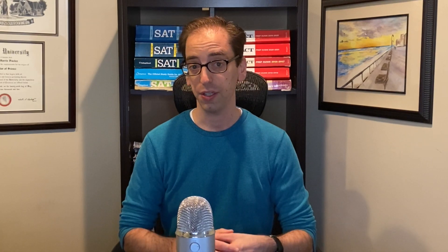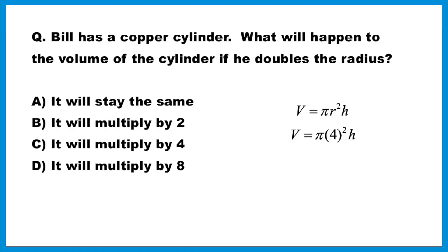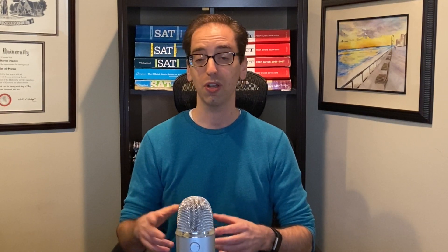Let's let the radius equal 2 — that keeps the numbers fairly easy. So if volume equals π r² times the height, plugging that in gives us π(2²)h, or π times 4h, or 4πh. If the radius was 2, we got a volume of 4πh. Now they tell us we're going to double the radius — going from a radius of 2, we would now try a radius of 4. Plugging that in: π r² times h gives us π(4²)h, or π times 16h, or 16πh. When we doubled the radius, we did not double the volume — we went from 4πh to 16πh. So doubling the radius actually made the volume increase by a factor of 4. The answer is C.